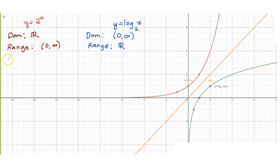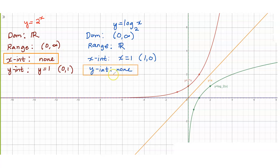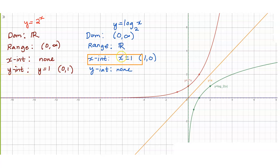Let us consider the intercepts. For the exponential function, it will not intersect the x-axis, so that's none. For the y-intercept, its y-intercept is at y equals 1 — that is, you have the point (0, 1). For our logarithmic function, it has an x-intercept at x equals 1, corresponding to the point (1, 0). For its y-intercept, none. Notice how the x and y were interchanged.